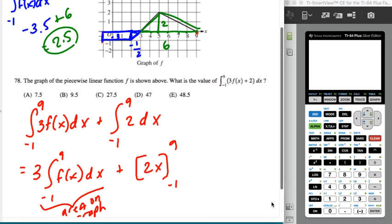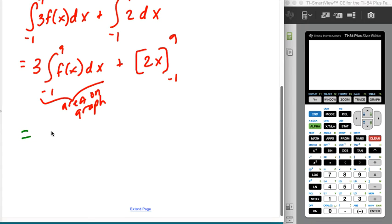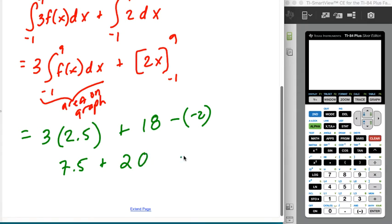Once I know that's a 2.5, I know that this answer is a three times a 2.5, plus this will be an 18 minus a negative two. So I'm pretty sure that that's a 7.5 plus a 20 and I should get 27.5.